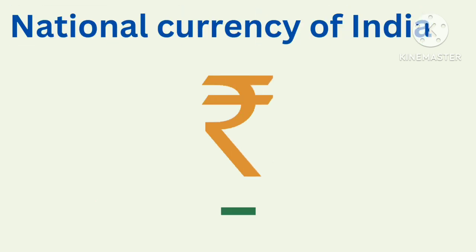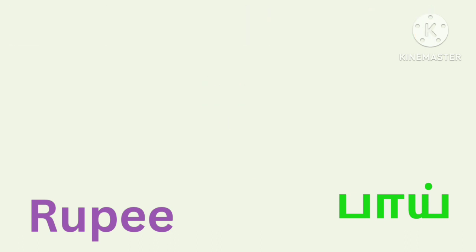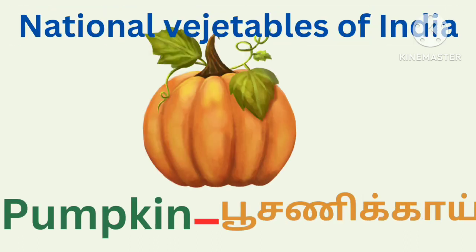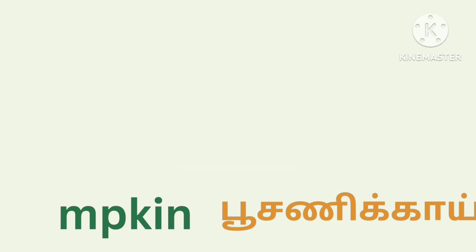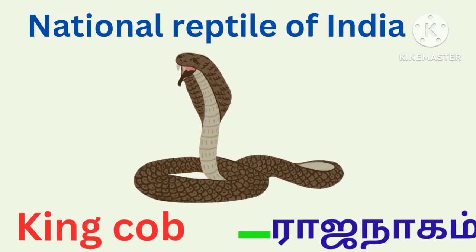National Currency of India — Rupee, Dubai. National Vegetable of India — Pumpkin, Pusini Kai.